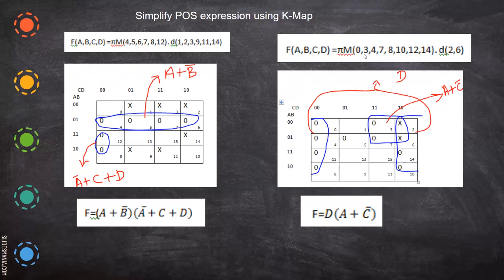If you take positions 0, 3, 4 as zeros, and 2 and 6 as don't cares, you can use the X positions to form a quad. Here you can also form an octet by rolling the map. In that case, you eliminate A, B, C, and D variables one by one — C is also eliminated — so you have only D remaining. For the other group you have A plus C-bar: A is present, B is eliminated, D is eliminated, giving C-bar. So the expression is D · (A + C-bar).